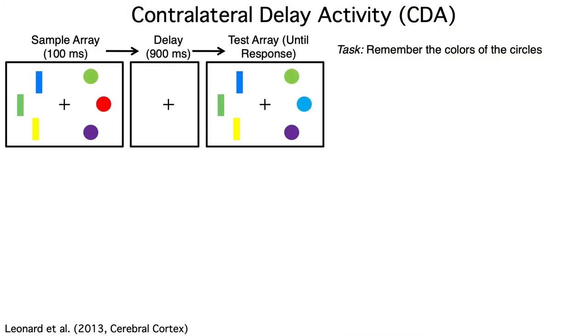In this task, subjects are asked to remember the colors of the circles and ignore the rectangles. They only have to remember the colors for about a second, and then they see a test array. They then indicate whether the colors of any of the circles have changed. In this example, the red circle changed to blue. The rectangles never change color.